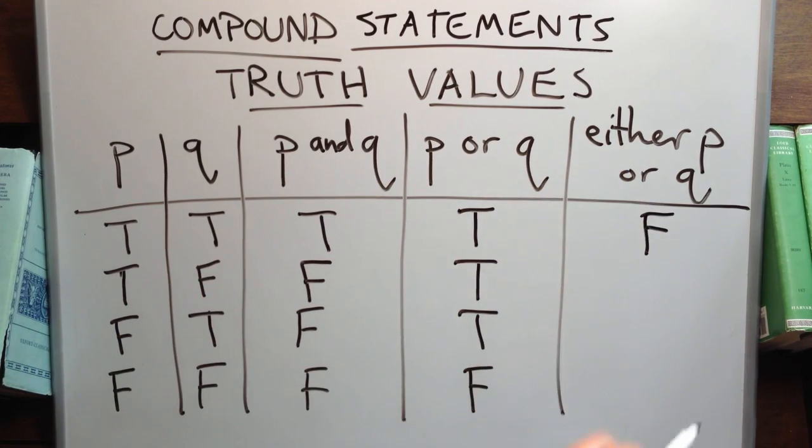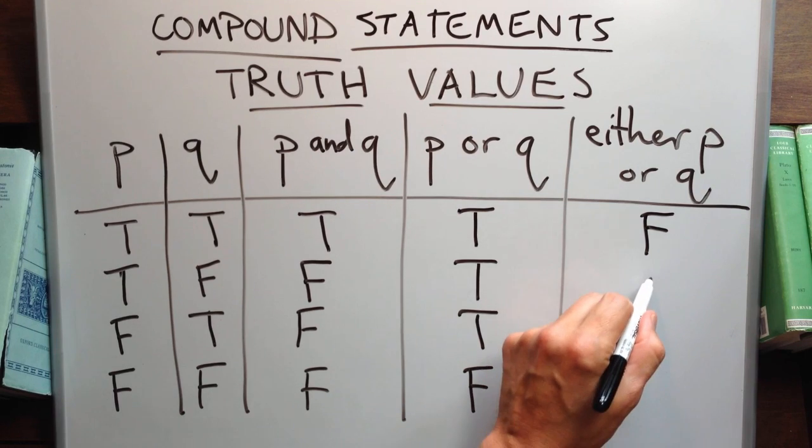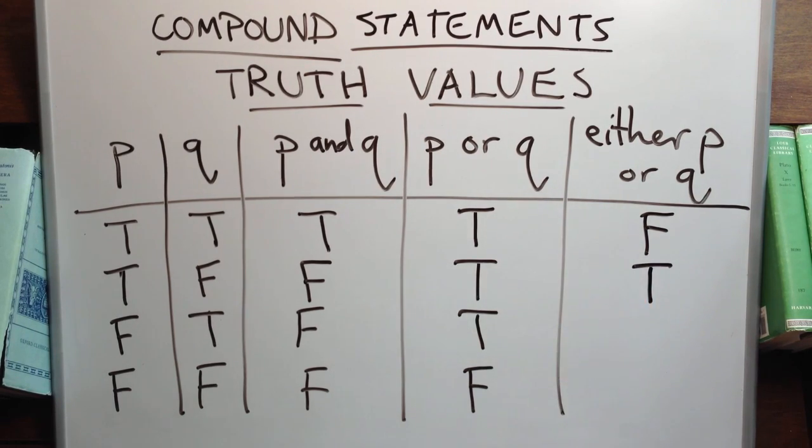Either P or Q is a little different because it asserts that only one of the component parts may be true in order for the compound statement to be true.